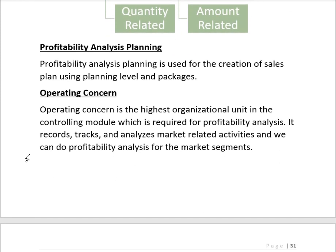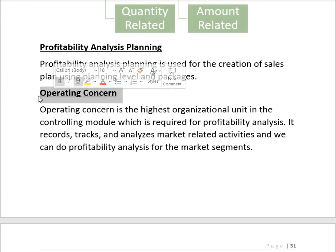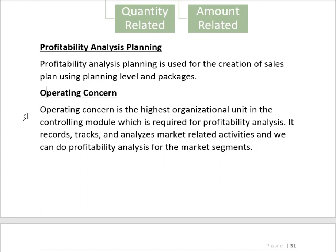In Profitability Analysis we can also do planning. PA planning is used for the creation of a sales plan using planning levels, packages, and operating concern. The operating concern is the highest organizational unit in the Controlling module, used for Profitability Analysis. It records, tracks, and analyzes market-related activities, and we can perform profitability analysis at the market segment level.